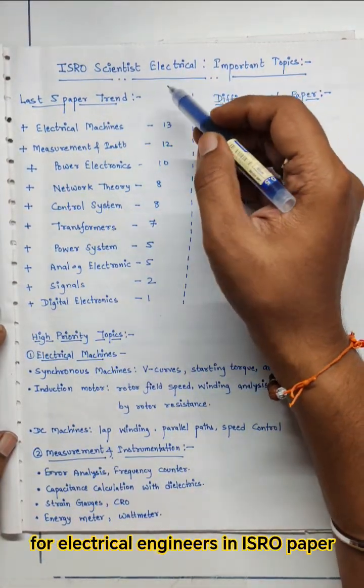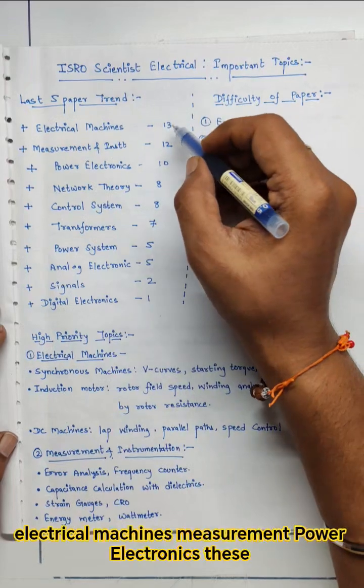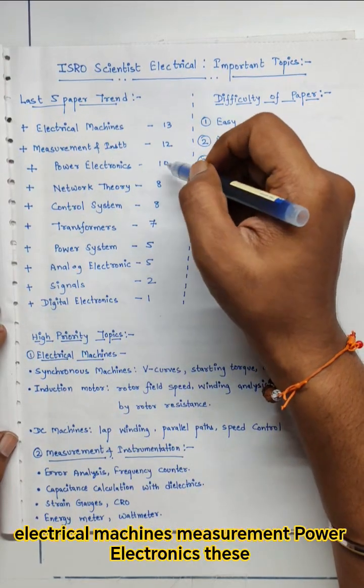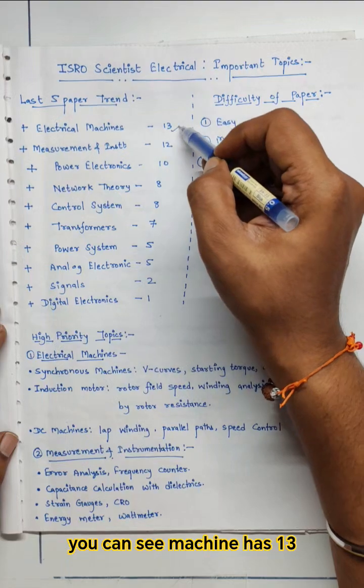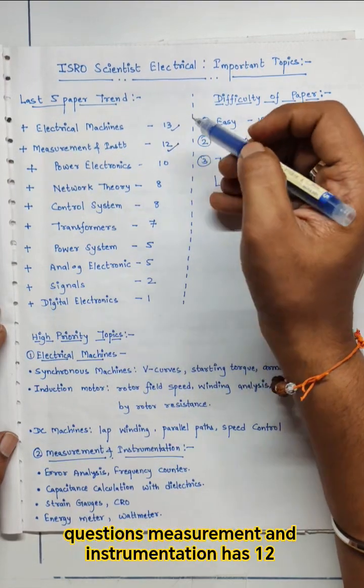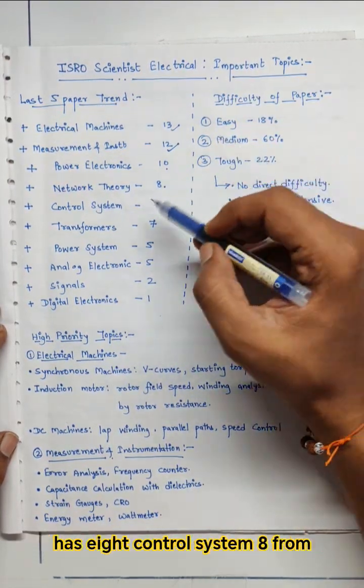So the last 5 year trend for electrical engineers in ISRO paper: electrical machines, measurement, power electronics, these play the very important role. As you can see, machine has 13 questions, measurement and instrumentation has 12, power electronics has 10, network theory has 8.